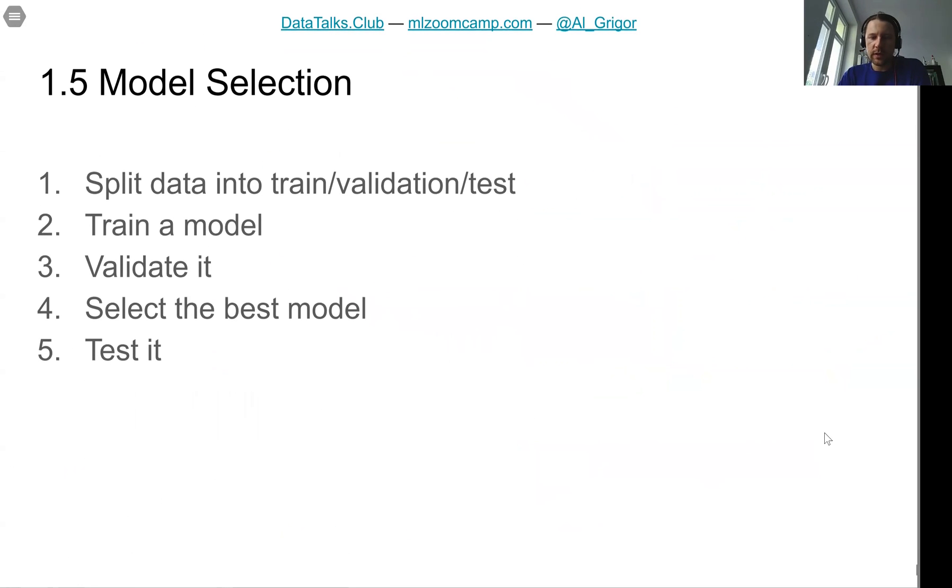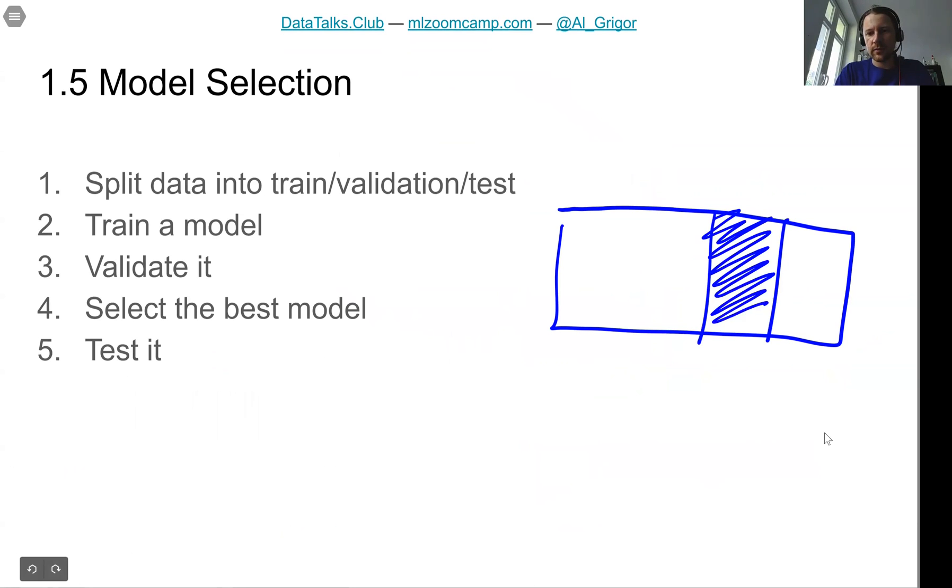We talked then in more detail about the modeling step and the process of selecting the best model. There we take the entire data set, we split it into three parts, and we use one part, the validation data set, for finding the best model, and then we use another part, the testing data set, to make sure that we don't accidentally pick a model that got good results just by chance.